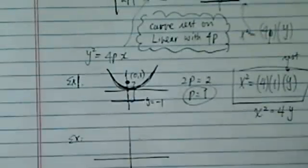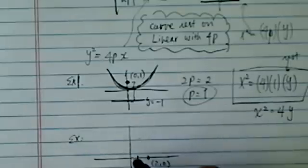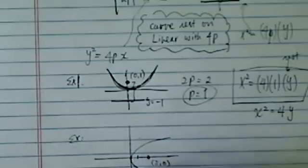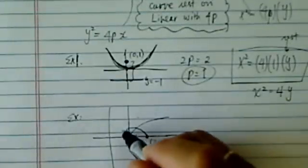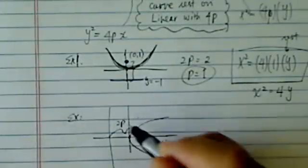So second question we were asked, the focus is at (2,0), let's write it at (2,0), it said it's open to the right and vertex at (0,0). Obviously, directrix, then it's almost tangential to the curve, and the distance here is 2p.